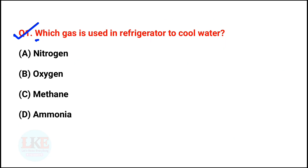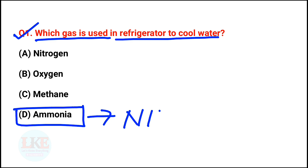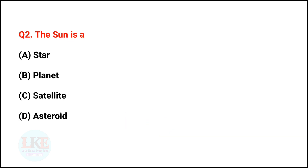First question: which gas is used in a refrigerator to cool water? A) Nitrogen, B) Oxygen, C) Methane, D) Ammonia. The right answer is option D — Ammonia (NH3). The sun is a star because the sun has its own light, and those who have their own light are called stars. Therefore, the sun is a star.